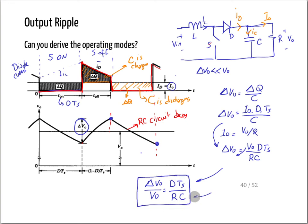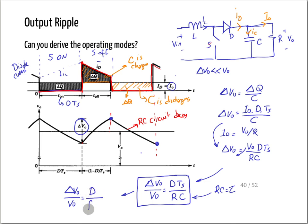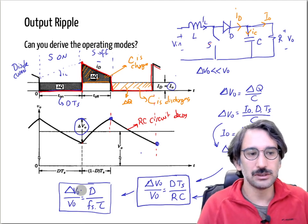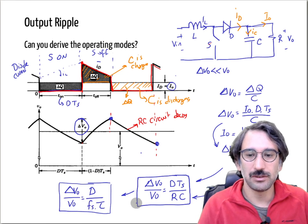Note that R·C is the time constant tau of the circuit. You can rewrite the equation as: delta Vo / Vo equals D divided by (fs times tau), where fs is the switching frequency. You can also express tau in terms of the corner frequency. The key result is the relationship between the RC time constant and the switching frequency.